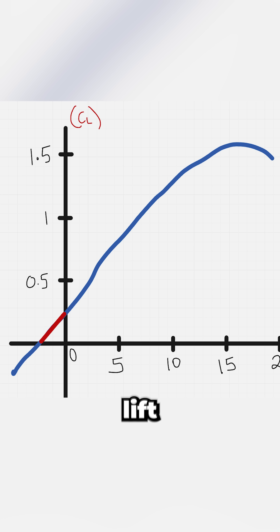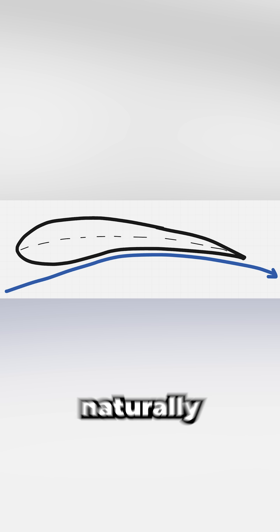Notice that this type of airfoil starts producing lift even at negative angles of attack because its curved shape, known as camber, naturally pushes the airflow downward, generating lift sooner.